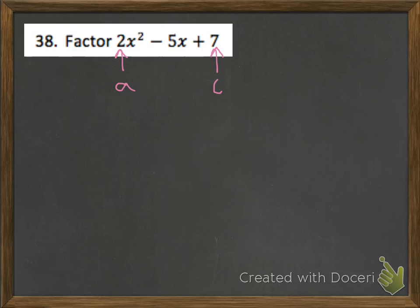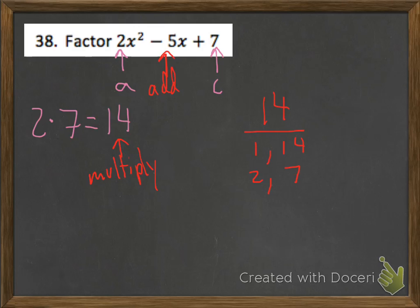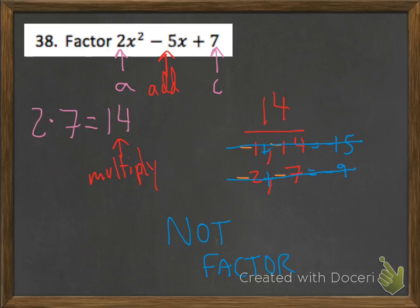A is the number in front of x squared and C is our last number. We multiply A times C: here, 2 times 7 equals 14. Now 14 is the number we need our factors to multiply to, and negative 5 is the number they need to add to. The factors of positive 14 are 1 and 14, and 2 and 7. Since the sum is negative 5, all factors would be negative — but negative 1 plus negative 14 is negative 15, and negative 2 plus negative 7 is negative 9. Neither gives negative 5, so this problem is not factorable.